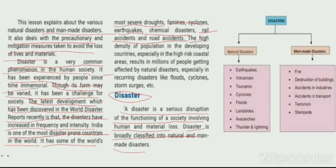The high density population in developing countries, especially in high-risk coastal areas, results in millions of people getting affected by natural disasters — particularly disasters like flood, cyclone, and storm surge.